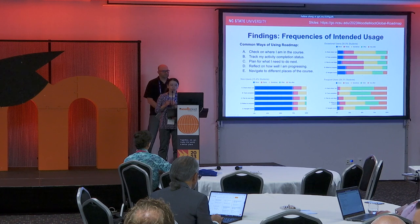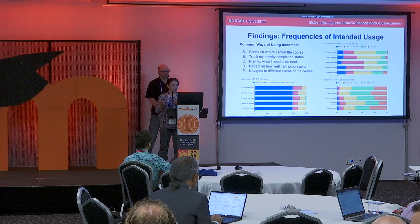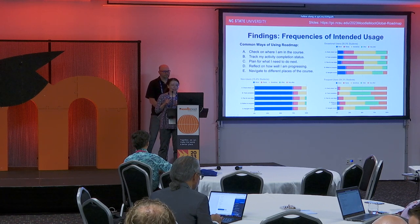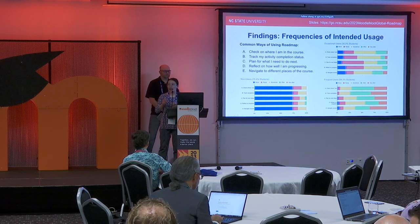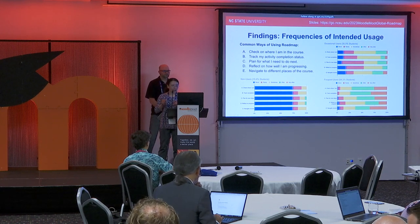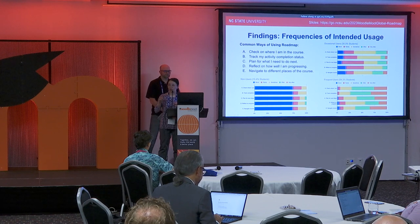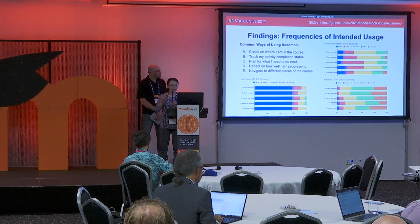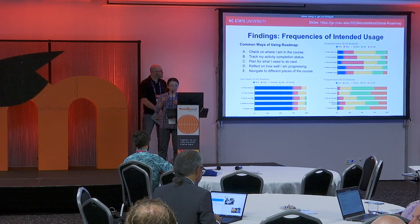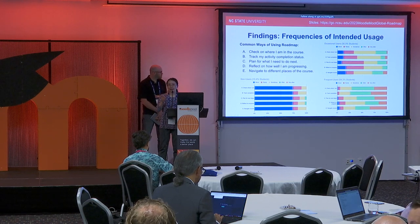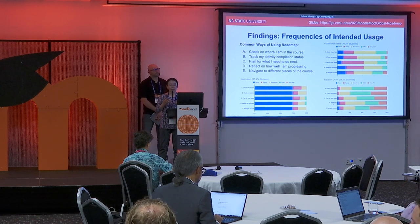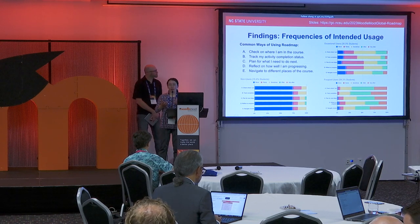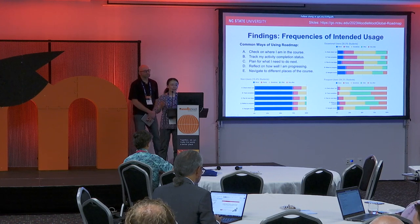These are the common ways students use the roadmap based on feedback from earlier versions of this tool. We asked students to rate how often they do these things. Most non-users never really did any of them. For occasional users, more than 60% used the roadmap for monitoring — checking where they are in the course, tracking activity completion status, and navigating the course. For frequent users, more than 90% did those things frequently. For occasional users, a little less than half used the roadmap for planning or reflection, whereas for frequent users more than 85% did those things. This is less frequent than monitoring use, which makes sense because the roadmap tool doesn't directly support planning and reflection, but we always recommend instructors have separate planning and reflection activities to go along with the roadmap.